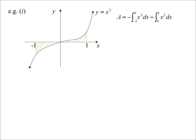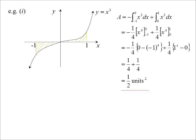So how do we handle it? We split it up into two areas. I can go from minus one to zero but make that negative — so it's minus the integral of that part. The integration is still the same: add one to the power, divide by the power, substitute in — and we end up with a half square units.